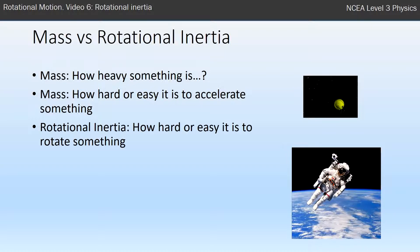Similar for rotational inertia. Rotational inertia is the equivalent to mass but in a rotating system, and it measures how hard or easy it is to rotate something. The symbol for rotational inertia is capital I, and the units are kilograms meters squared. We'll explain why on the next slide.